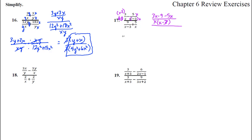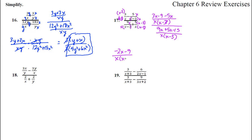Now the bottom fraction: common denominator of x times x minus 3. We times by x here and times by x minus 3 here, making those two the same exact denominators. We get 9x plus 5x minus 15 over x times x minus 3. The top fraction simplifies: 3x minus 5x is negative 2x minus 9, over x times x minus 3.